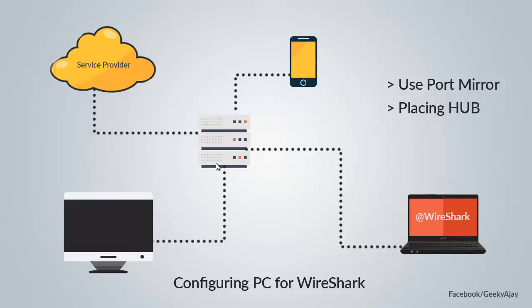Port mirroring basically works like this: when one PC sends traffic to the switch, the switch copies that traffic to another port for capturing or other analysis. If spanning or port mirroring is present on the switches, the second method is to place a hub in your segment — if you place a hub in your network, the traffic will be broadcast to your system.